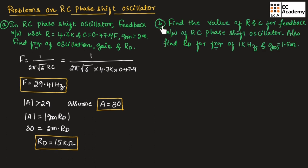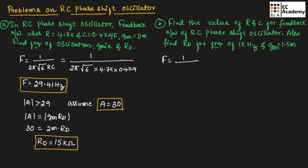Now let us consider the second problem. Here we need to find the values of R and C for the feedback network of RC phase shift oscillator, and also find the value of RD, for a frequency of oscillation of 1 kHz and gm = 1.5 mA/V. The frequency of oscillation is f = 1 / (2π√6 · RC).